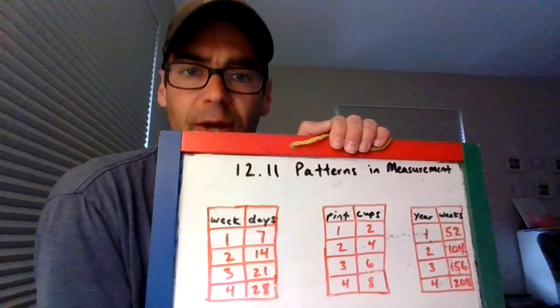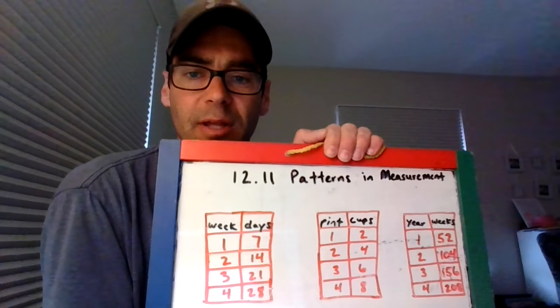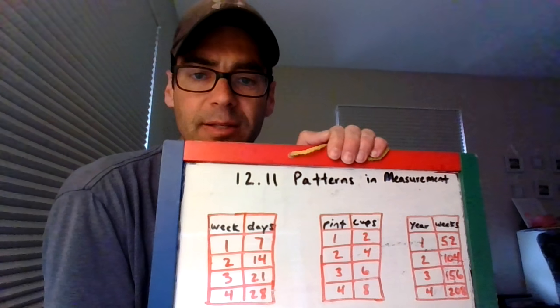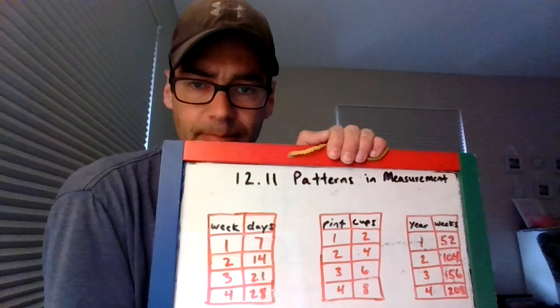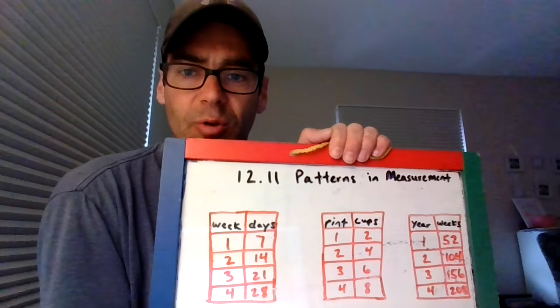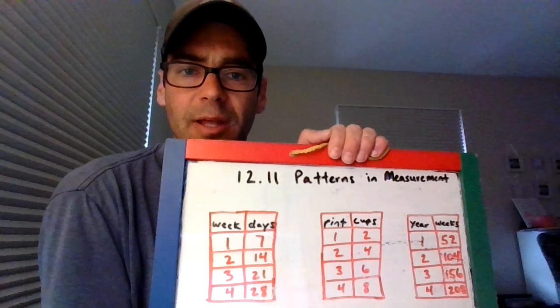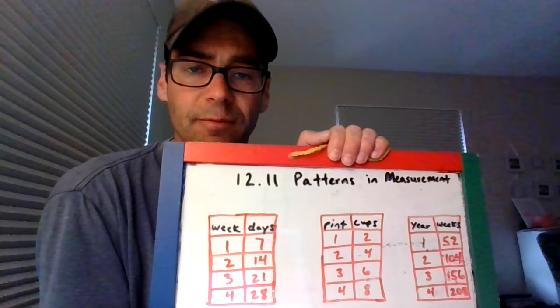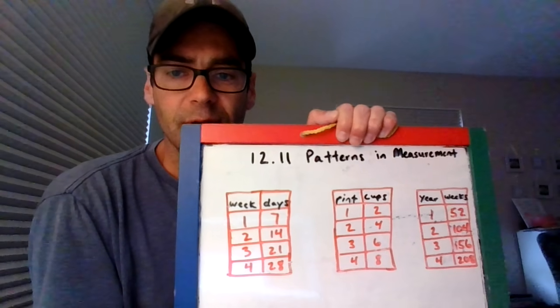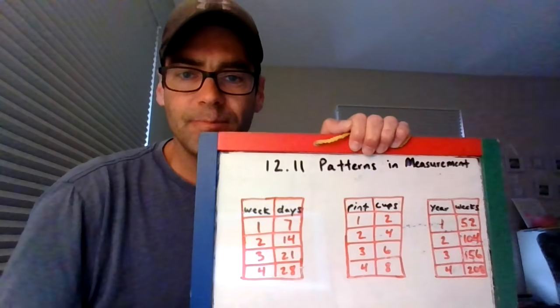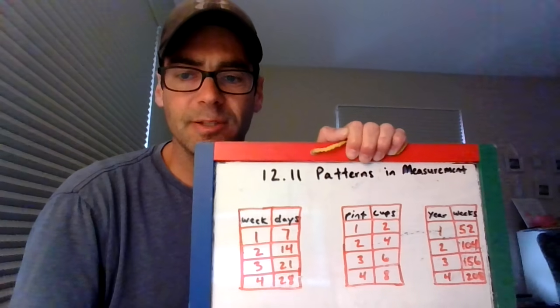You are going to be looking at patterns in measurement and determining the labels that are going to go at the top of each column. Take what you know about patterns that you've been doing for your whole life, take what you know about measurement and units of measurement that you've been studying for this chapter, and see if you can figure out the patterns. I hope you guys have a great day. Thanks so much. Bye.